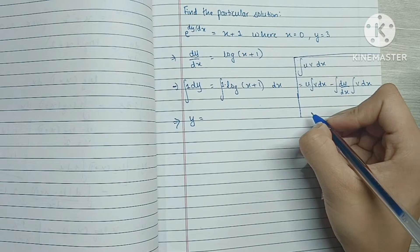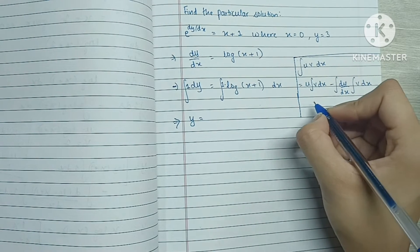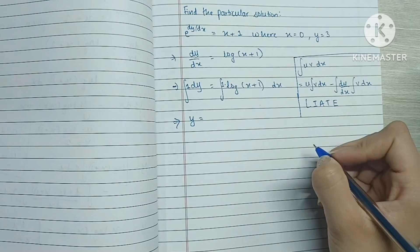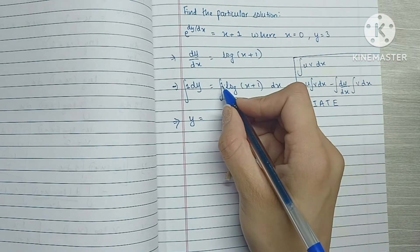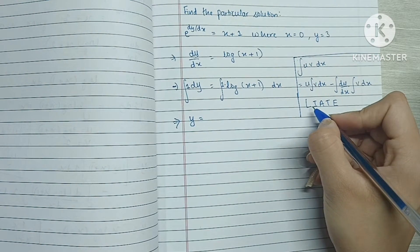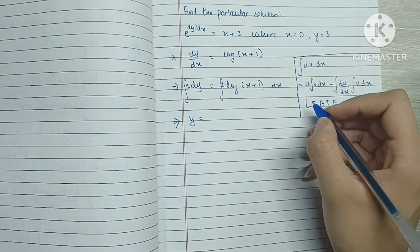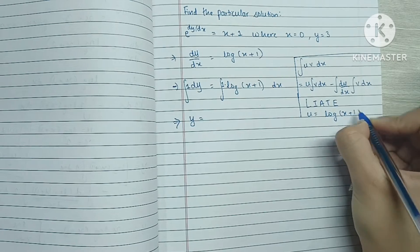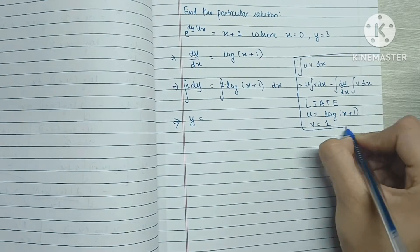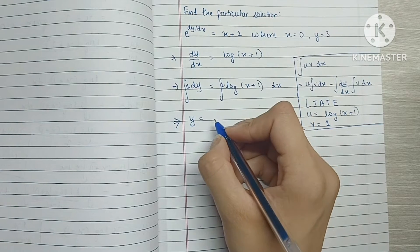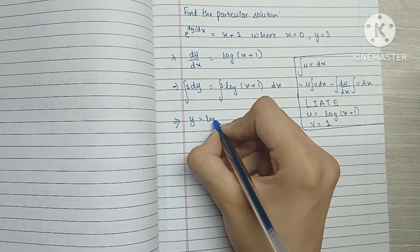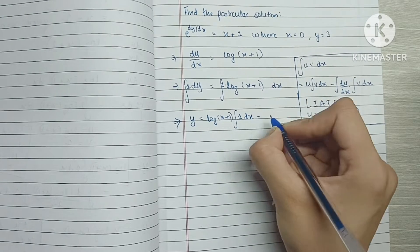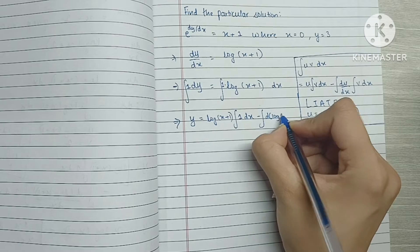To decide which term we keep as u and which term we keep as v, we use the ILATE rule. The two terms are 1 and log. Since log comes first in the ILATE rule, we place log as the u term and 1 as the v term. So we have u into the integration of v, which is log(x + 1) into the integration of 1 dx, minus the integration of the differentiation of log(x + 1).